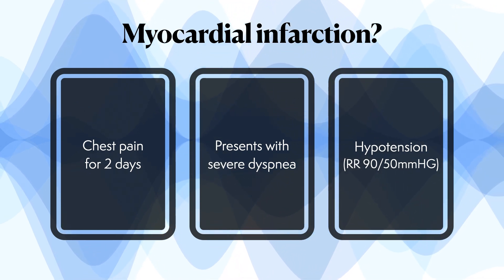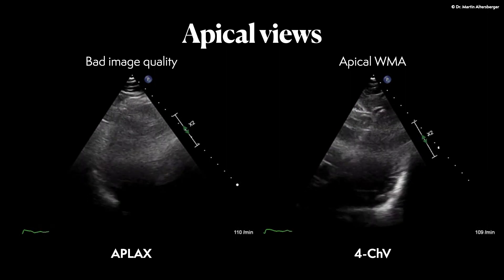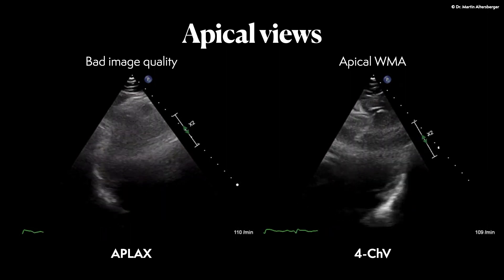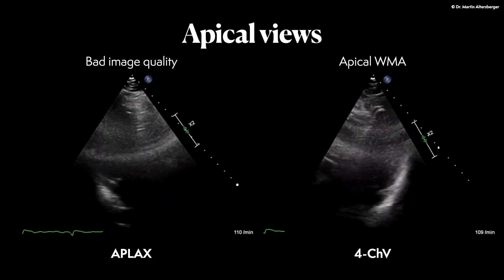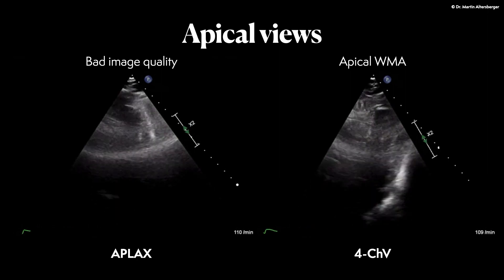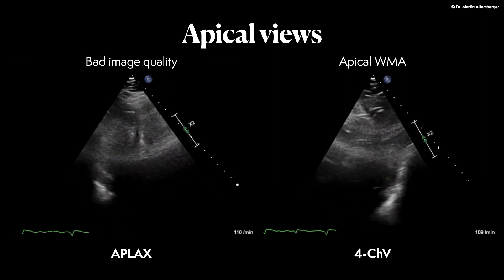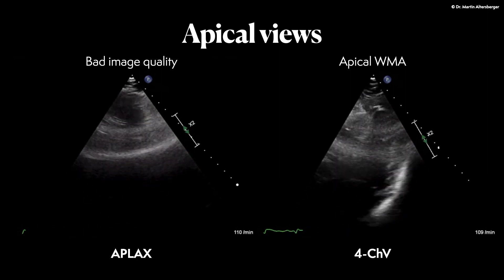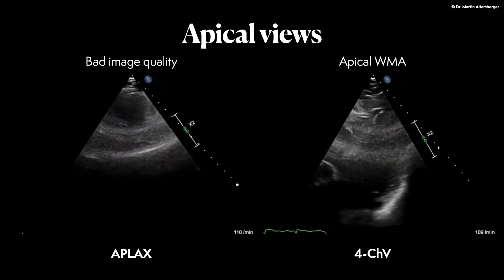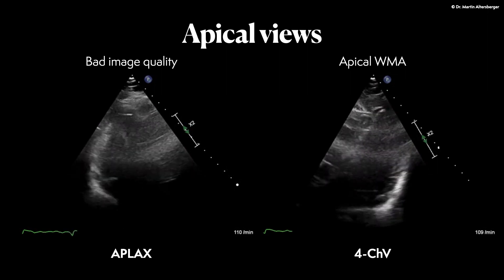How does her echocardiogram look? In the apical views we do see the apical long axis view. There is terrible image quality and it's very hard to see the left ventricle at all.